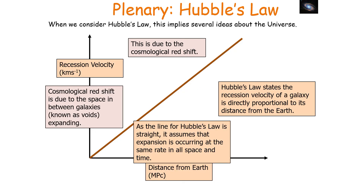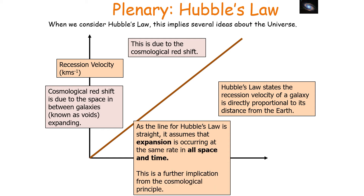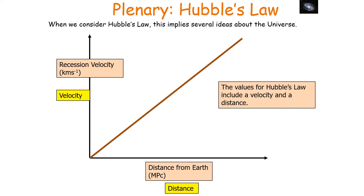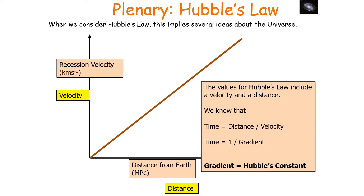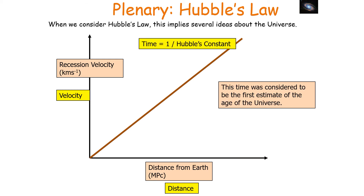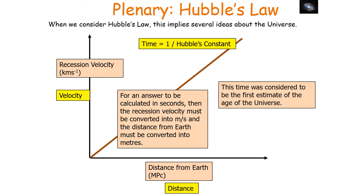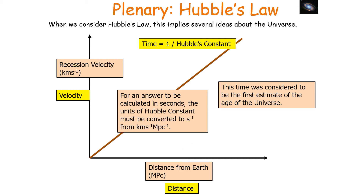As the line for Hubble's Law is straight, it assumes expansion occurs at the same rate in all space and time. Since the graph plots recession velocity against distance, and time equals distance over velocity, time equals 1 over the gradient. The gradient is Hubble's constant, so the age of the universe is approximately 1 over H. To calculate this in seconds, recession velocity must be converted to metres per second and distance to metres, converting Hubble's constant into units of seconds to the minus 1.